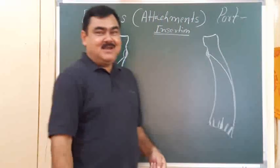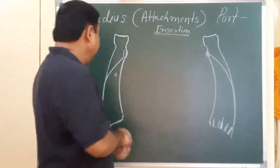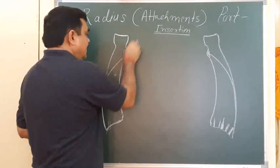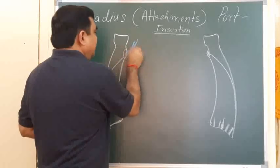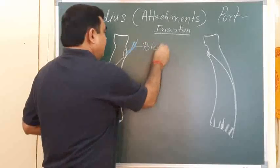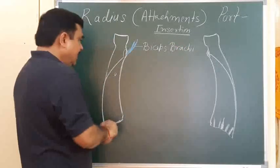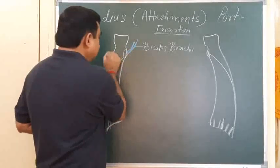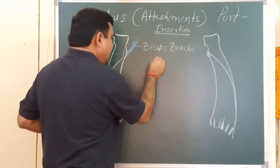Now let us discuss the attachments of the radius. First, the insertion of muscles. The muscles inserted here: biceps brachii attaches on the posterior part of the radial tuberosity.